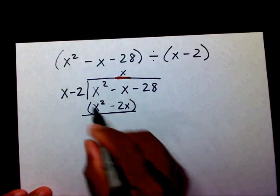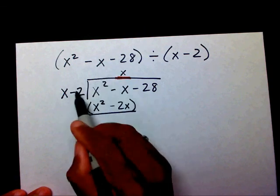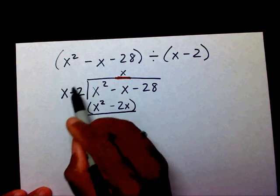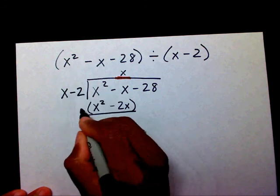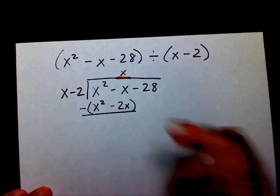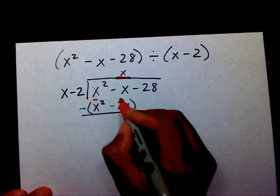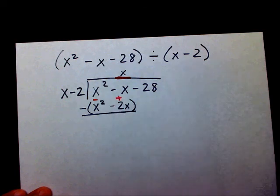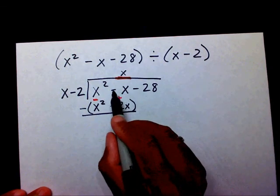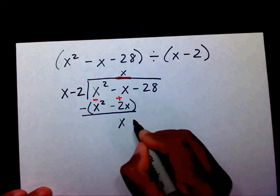Remember, you have to make sure you multiply this top number by both terms — by the x and by the negative 2. So now I'm going to subtract. When I subtract, this positive x squared will become a negative x squared, and this negative 2x will become a positive 2x. The x squareds are going to cancel each other out. That's going to leave me with negative x plus 2x, which is just x, minus 28.